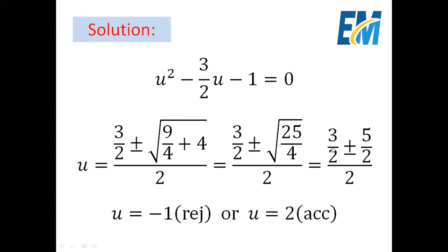So u = (3/2 ± 5/2) / 2. The first root is (3/2 − 5/2) / 2 = −1, which is rejected because u must be positive. The second root is (3/2 + 5/2) / 2 = 2, which is accepted because u is positive.